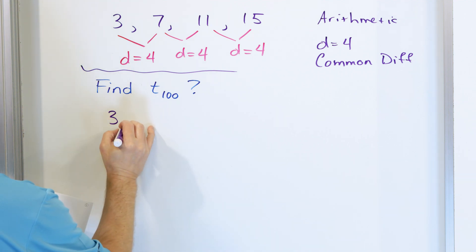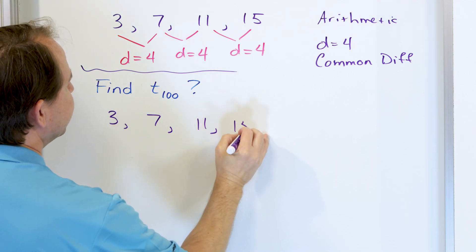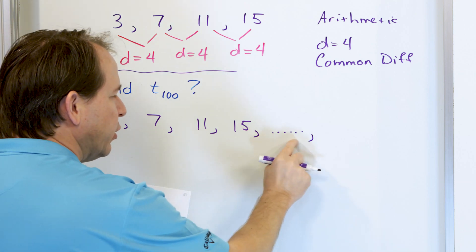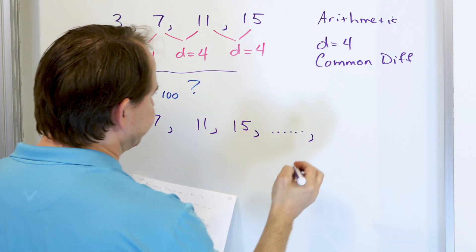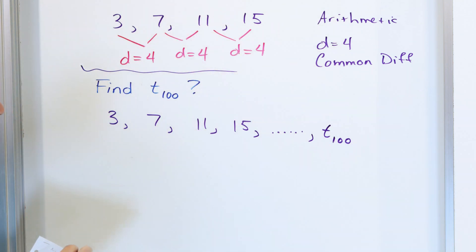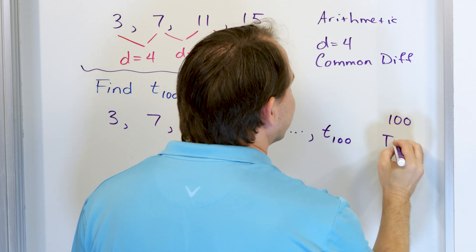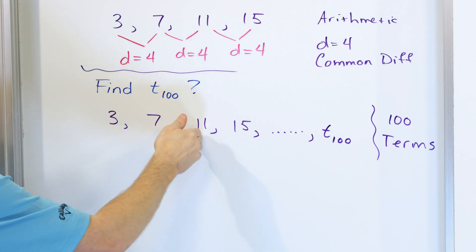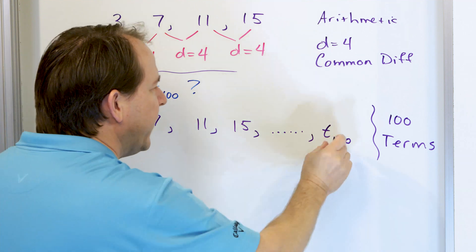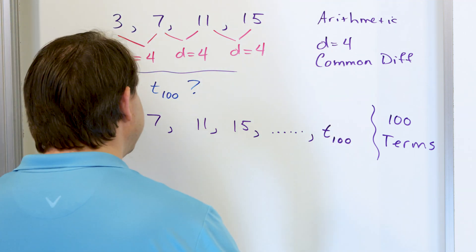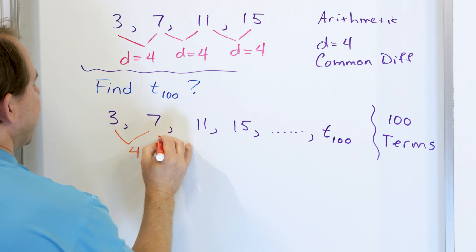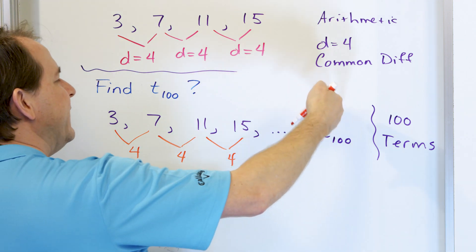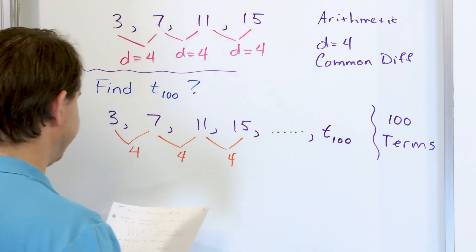We have 3, then 7, then 11, then 15, and a bunch of terms in between, finally reaching T sub 100. So overall, there are 100 terms in the sequence. The difference between each adjacent pair is 4, all the way up to the 100th term. Now, how many differences are there between terms going all the way out to the 100th term? If you have 100 numbers and you're subtracting pairs, there are 99 differences — not 100 — because you're taking them two at a time.